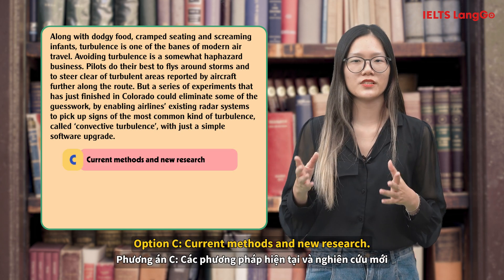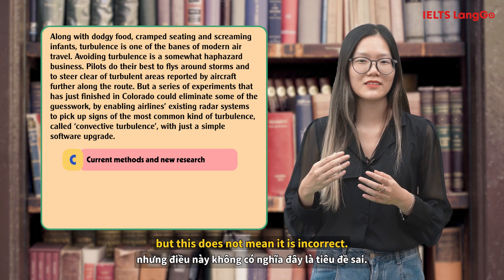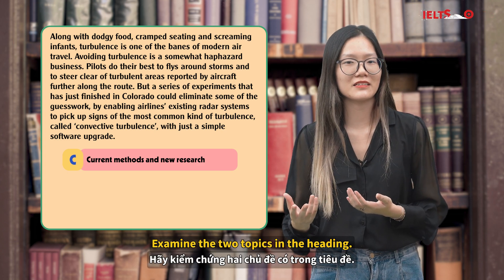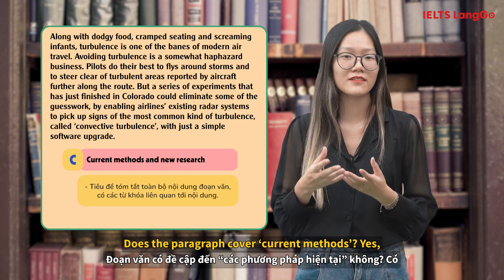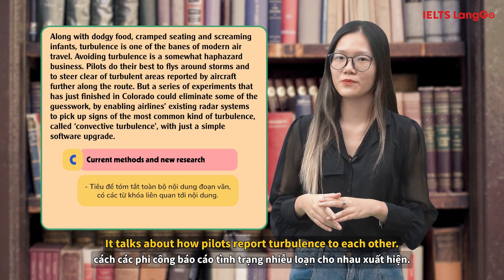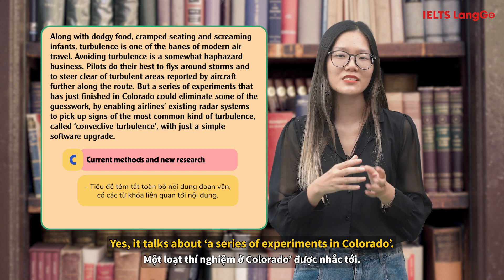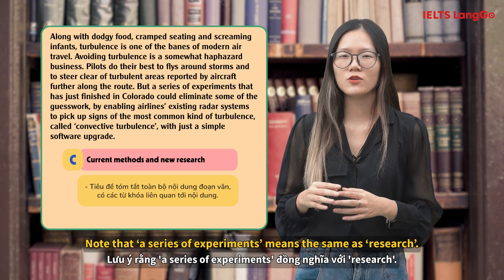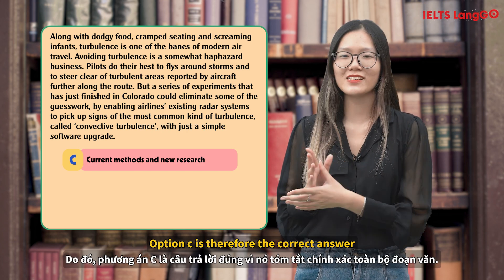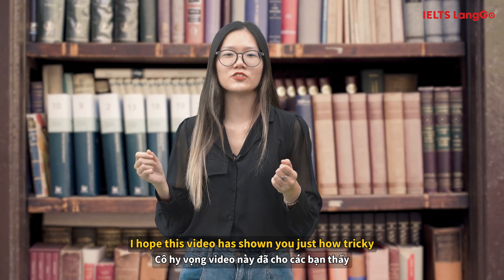Option C: Current methods and new research. You will not find any of the words in this heading in the paragraph. But this does not mean that it is incorrect. Examine the two topics in the heading. Does the paragraph cover current methods? Yes — it talks about how pilots report turbulence to each other. Does the paragraph cover new research? Yes — it talks about a series of experiments in Colorado. Note that a series of experiments means the same as research. Option C is therefore the correct answer, because it summarizes the whole paragraph accurately.